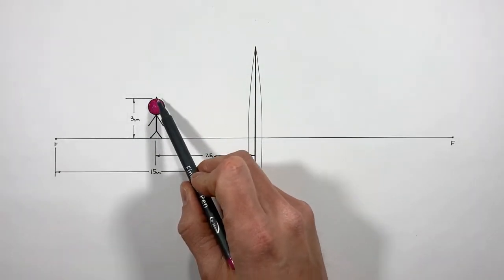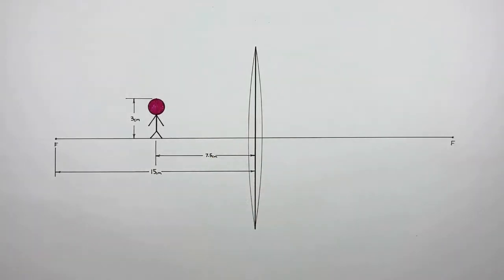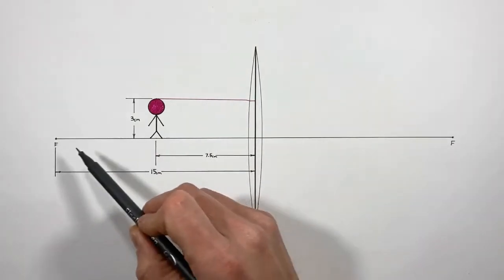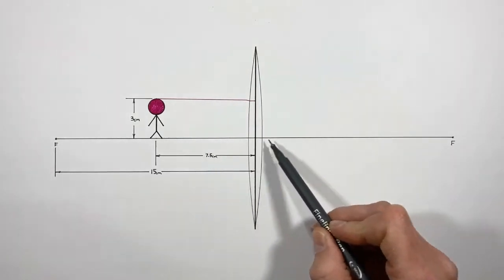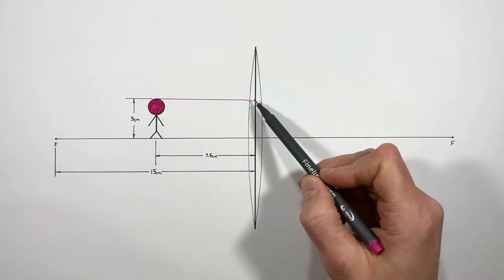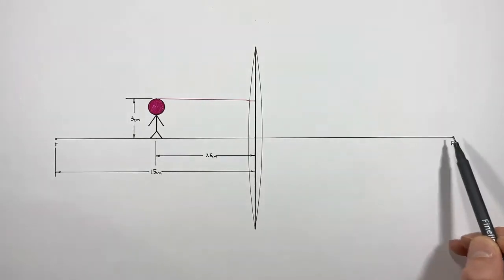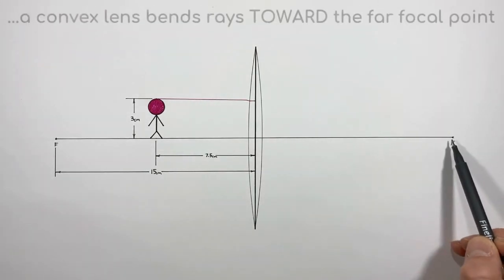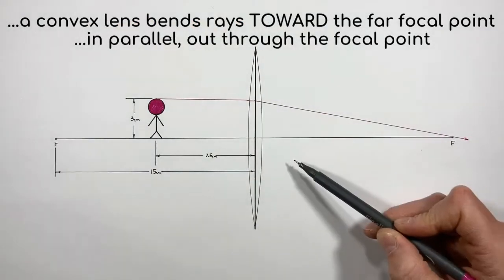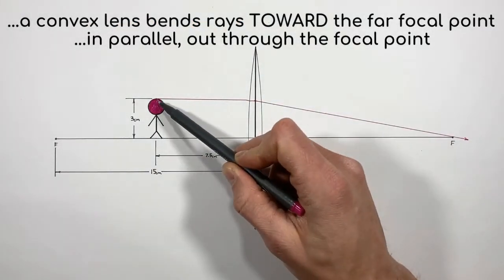Starting with our ray tracing diagram, we're first going to draw the principal rays starting from the top of this object headed towards the lens. The principal ray travels parallel to the principal axis towards the lens, and when it strikes the lens it's going to refract and head through this focal point.